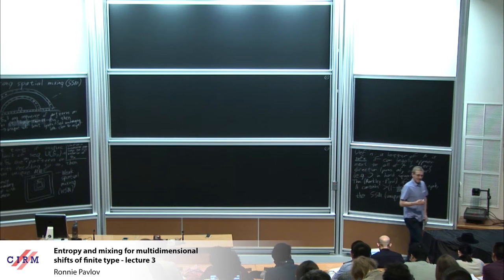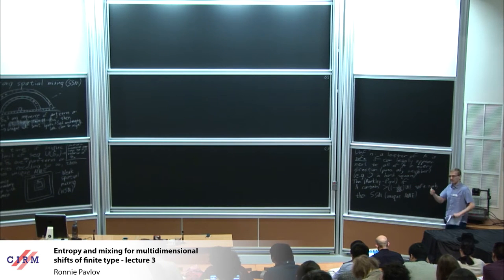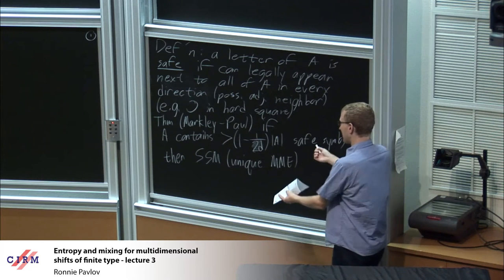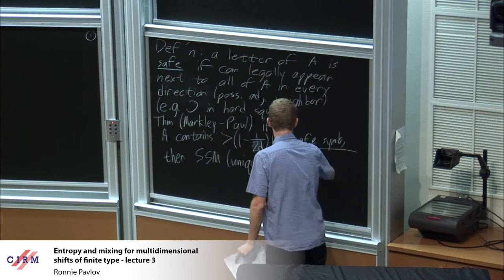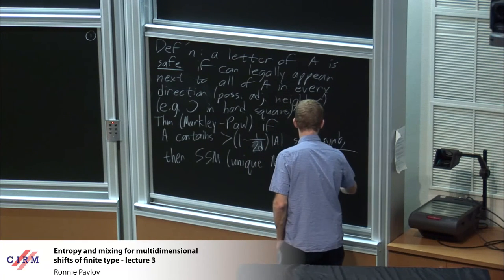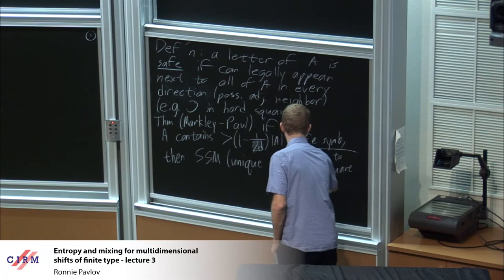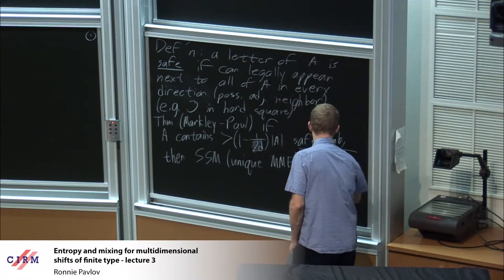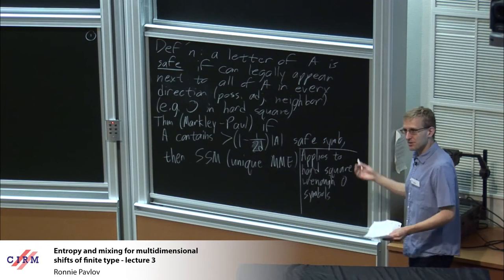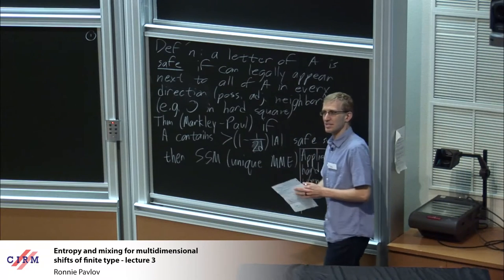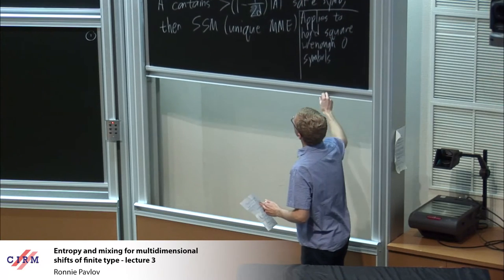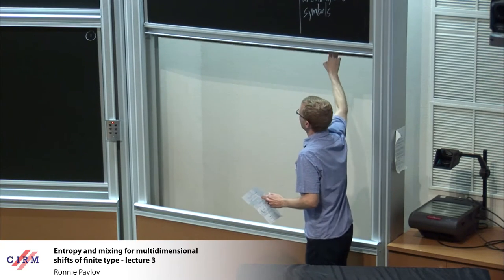This is maybe the simplest class where it's known that all the decay of boundary influence properties actually hold. One example where this would apply is not the standard hard square model — the proportion of safe symbols there is only one-half — but it would definitely apply to a generalized hard square model with enough zero symbols. I would love to tell you why this is true; the proof is not so impossible to present, but for now I think it's best just to say magic — they proved this.